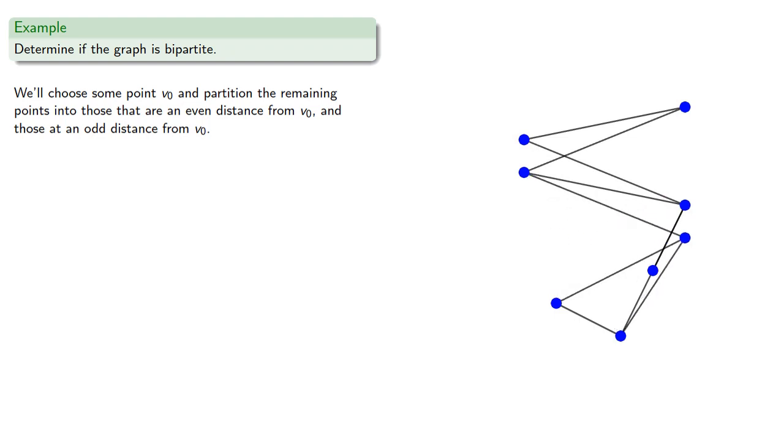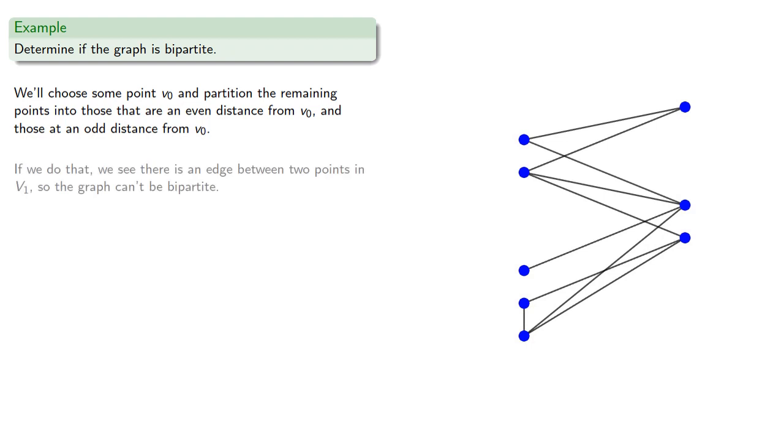The points adjacent to those points are at an even distance from our starting point, so we'll move them off to the other side. The points adjacent to those points are now at an odd distance, we'll move them back. And now notice that there is an edge between two points in the odd distance set, so the graph can't be bipartite.